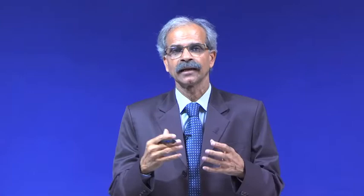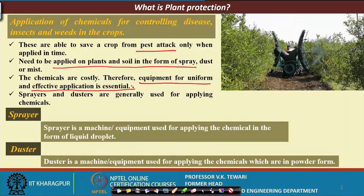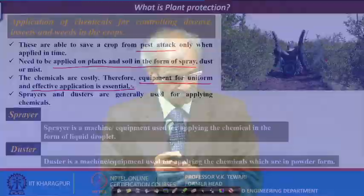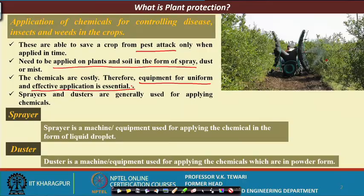If it is only a growth item which has to be given to all the plants, then there is no problem — we can uniformly spread it. But if it is only insect pest control, there may be a case where the crop is not infected all over; it may be infected only at certain localized locations. So we would have to apply judiciously and uniformly at the location where it is needed. For these, sprayers and dusters are the devices used for applying these chemicals.